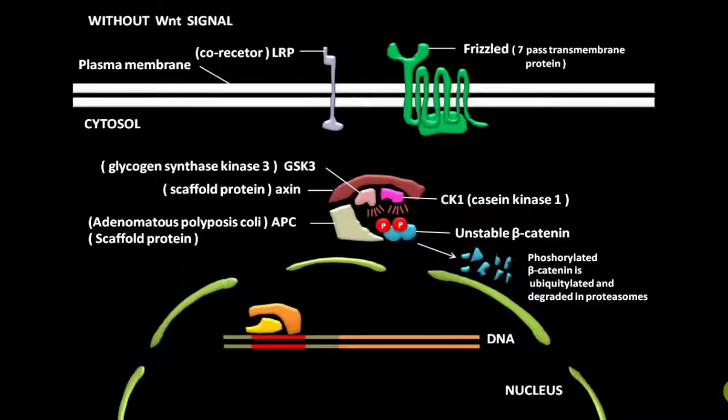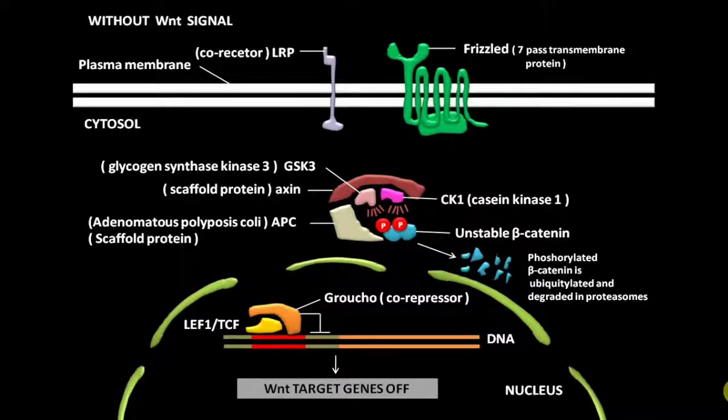In the nucleus, the complex of co-repressor protein Groucho and gene regulatory protein LEF1 or TCF bound to the Wnt-responsive genes. This complex inhibits or represses the transcription of Wnt-responsive genes. As a result, the Wnt-responsive genes are kept inactive or silent.